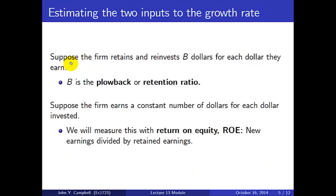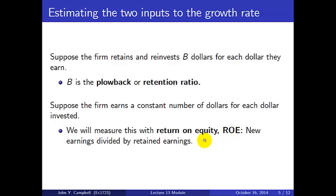We'll assume that the firm retains and reinvests B dollars for each dollar of earnings. B is a ratio known as the ploughback or retention ratio. We'll also assume that the firm earns a constant number of dollars for each dollar invested, and we'll call this the return on equity or ROE. This is an accounting concept, but for the present purpose we can think of it as new earnings divided by retained earnings.